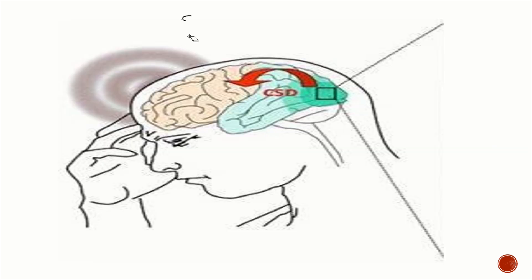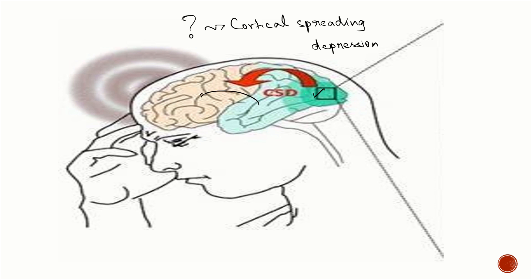The cause of aura is due to cortical spreading depression. It usually starts in the occipital cortex and then progresses anteriorly at a rate of two to three millimeters per minute. This is a very important MCQ: the reason for aura in migraine is cortical spreading depression.